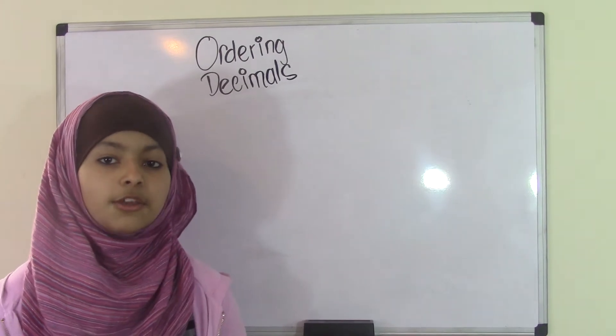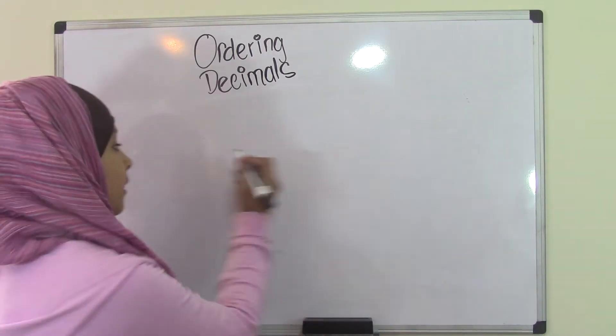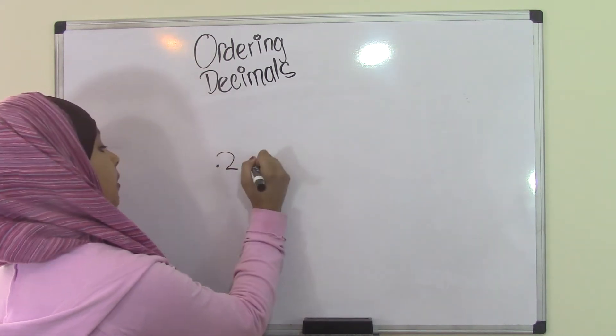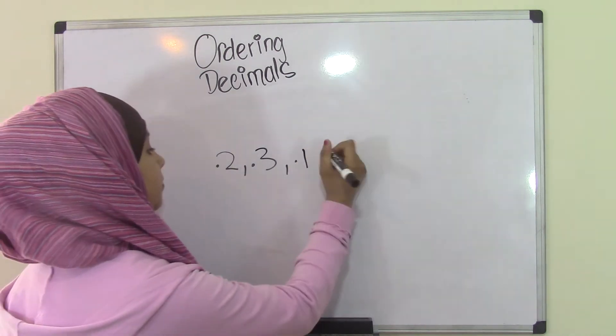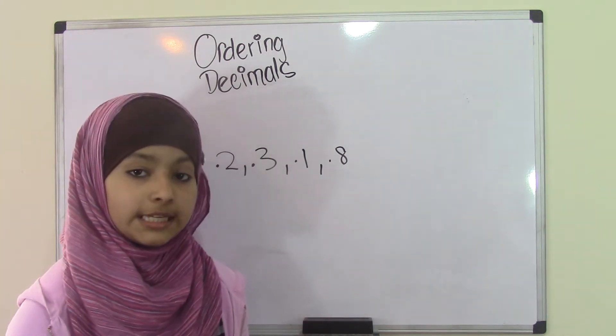When you're ordering decimals, you'll probably get decimals like 0.2, 0.3, 0.1, and 0.8. You need to order these from least to greatest.